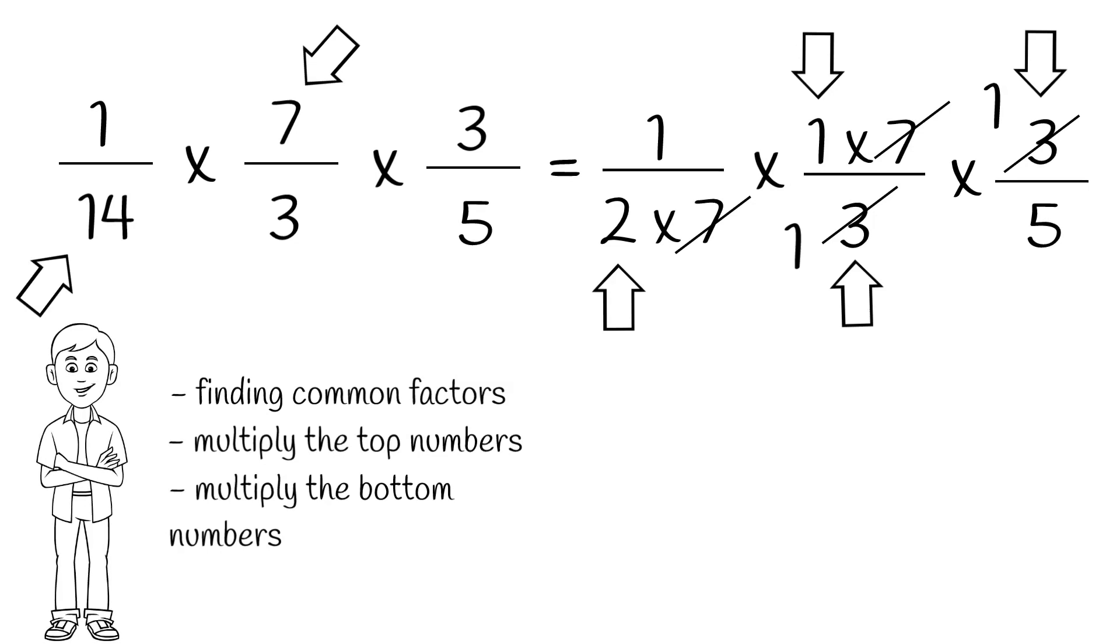So on the top, we have 1 times 1 times 1 is 1. And on the bottom, 2 times 1 times 5 is 10. That means our answer is 1 over 10.